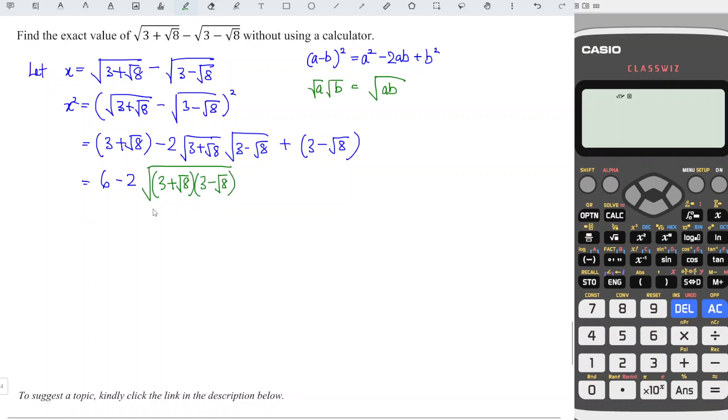Apparently these are conjugates of each other, which means that we should have (a-b)(a+b), and then we obtain a² - b².